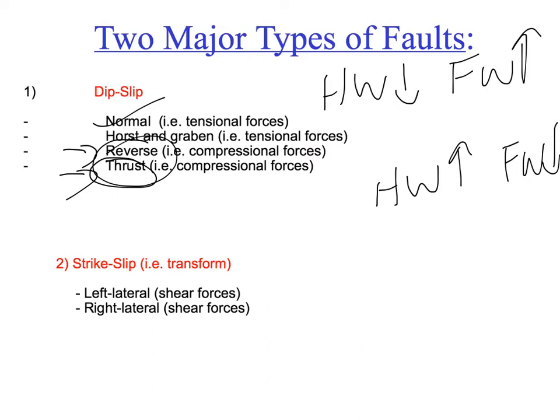A strike-slip fault is when the movement is lateral — two rock bodies or two plates basically sliding past each other. The two examples are left lateral and right lateral. You put yourself on one block, look across the fault, and ask what the other block is doing. If the other block is moving to the left, then it's a left lateral. If the other block is moving to the right, then it's a right lateral.